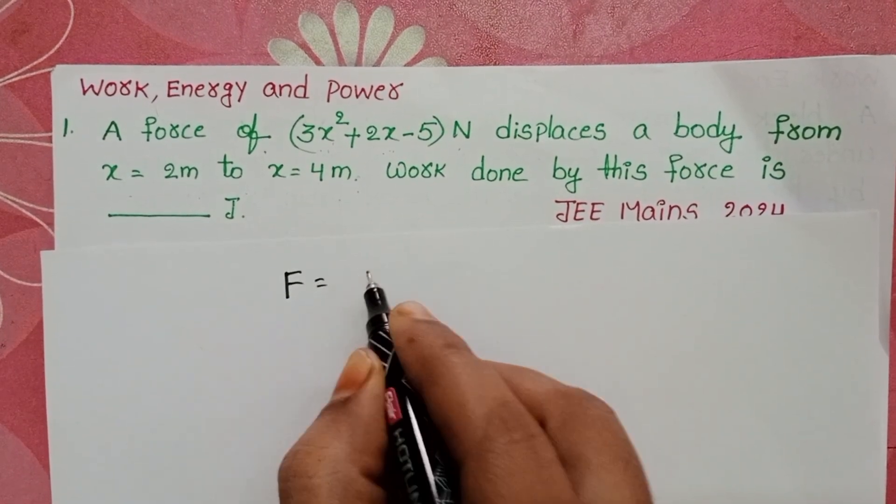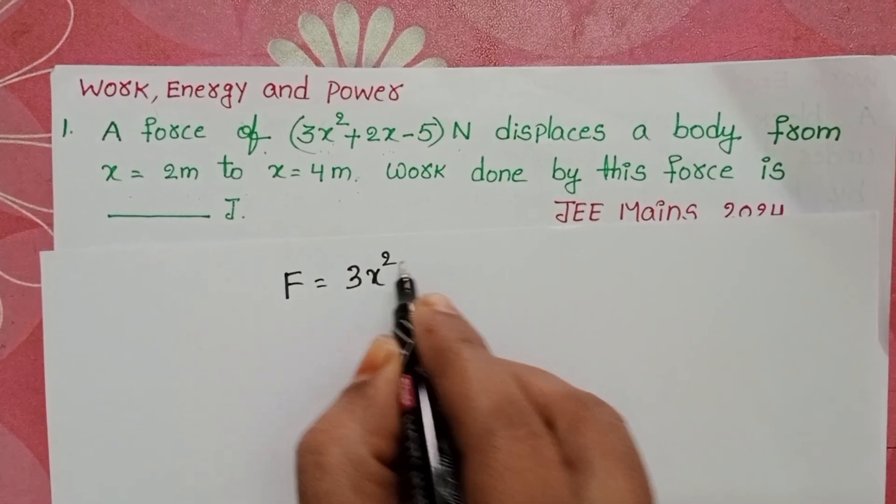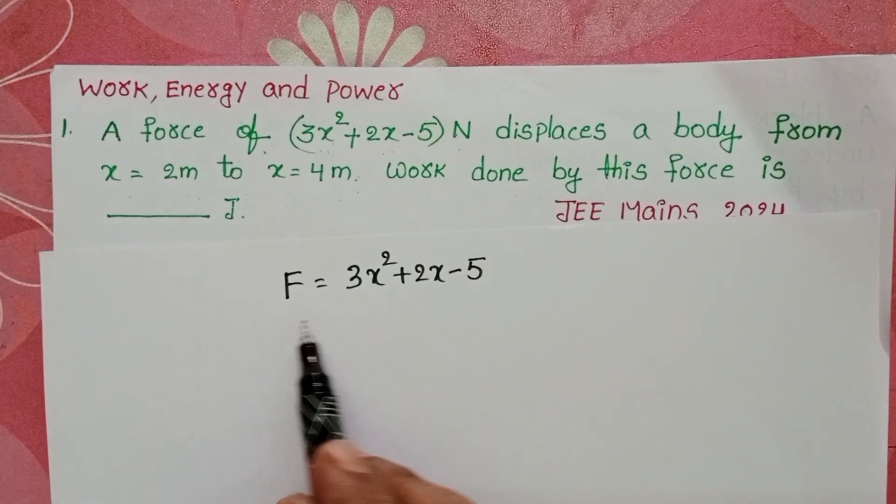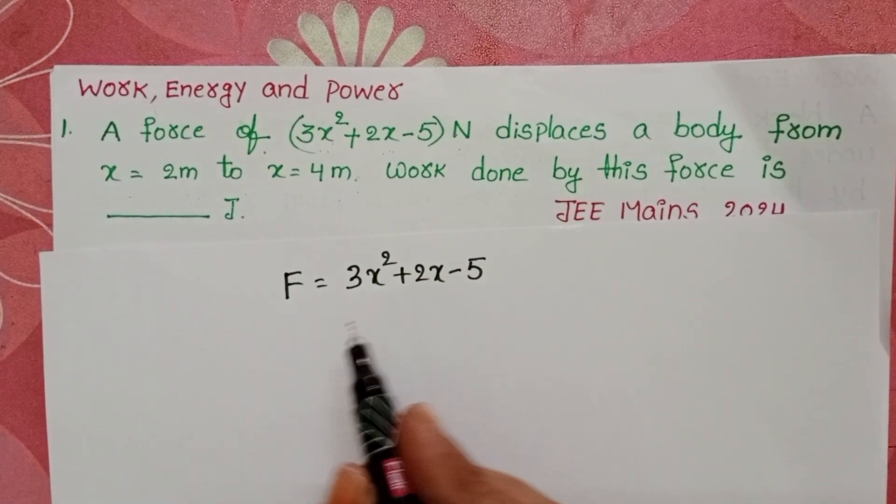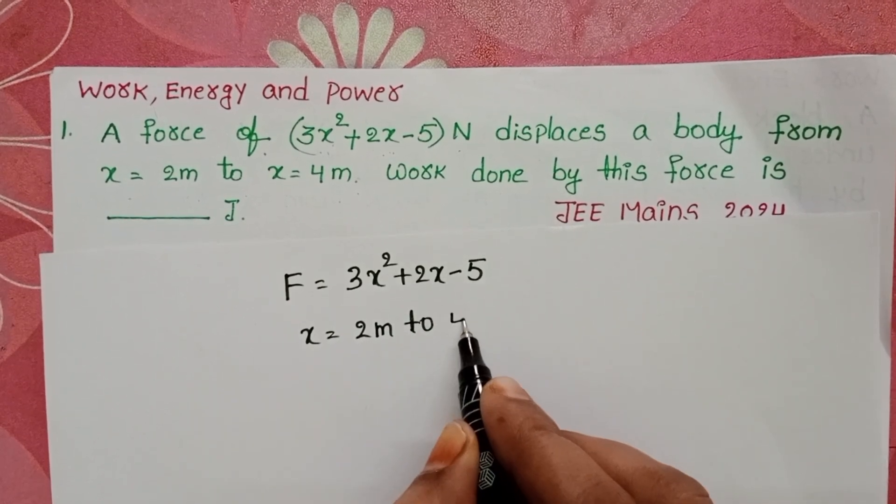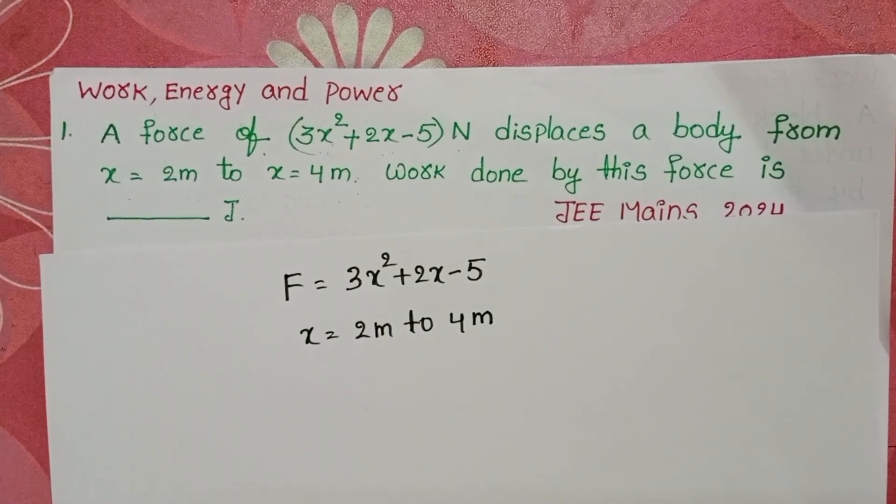Force is equals to 3x² + 2x - 5 newtons. Here force is a function of x and it displaces from 2 meters to 4 meters. By using this we have to find out the work done.